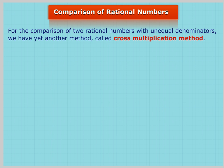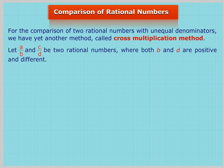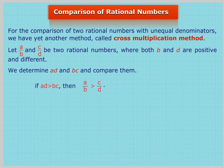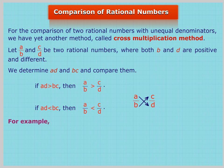For the comparison of two rational numbers with unequal denominators, we have yet another method called the CROSS-MULTIPLICATION METHOD. Let A/B and C/D be two rational numbers where both B and D are positive and different. We determine AD and BC and compare them. If AD is greater than BC, then A/B is greater than C/D. For example, -5/7 is less than -4/9 because -5 multiplied by 9 is less than 7 multiplied by -4.